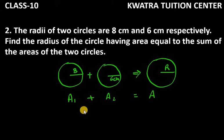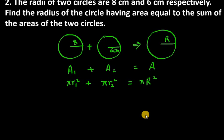Here we will take πr₁² for the first circle's area. For the second circle, we will take πr₂². The new circle area will be πR², where capital R represents our new circle radius.